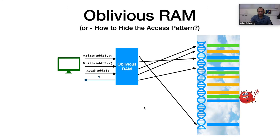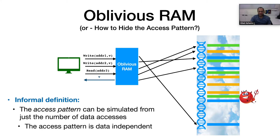Oblivious RAM addresses this exact problem. It can be viewed as a compiler that takes the program the client wishes to execute and converts it to an oblivious program, where the untrusted server cannot understand which elements the client is actually accessing. This is achieved by shuffling parts of the memory every now and then and moving blocks around to hide the access pattern. The security requirement is that the access pattern — which addresses are being accessed in the physical memory — can be simulated and therefore does not reveal information on which addresses are being accessed by the program.